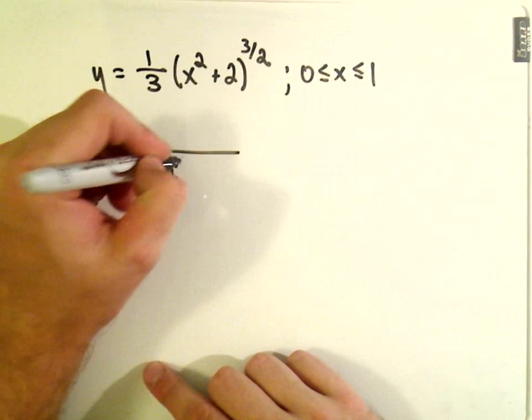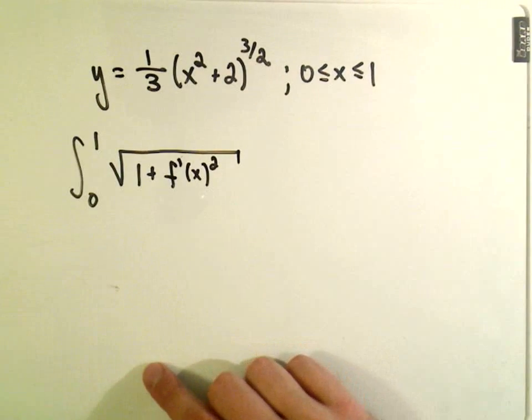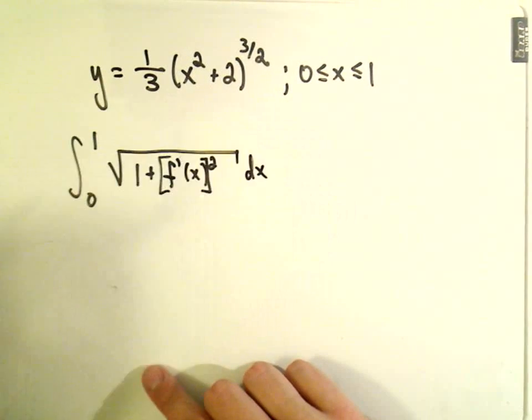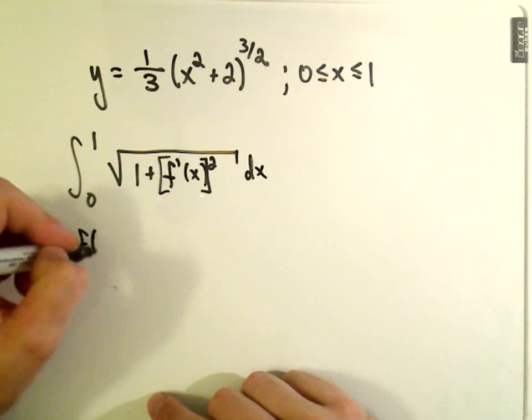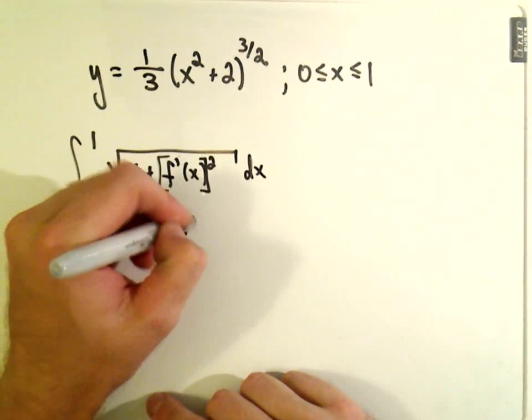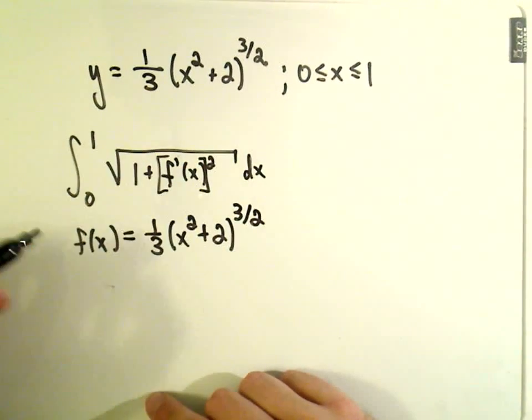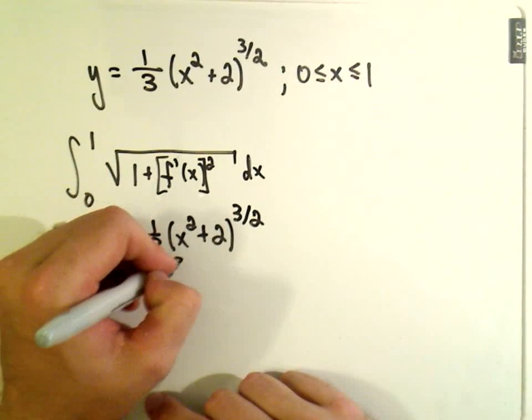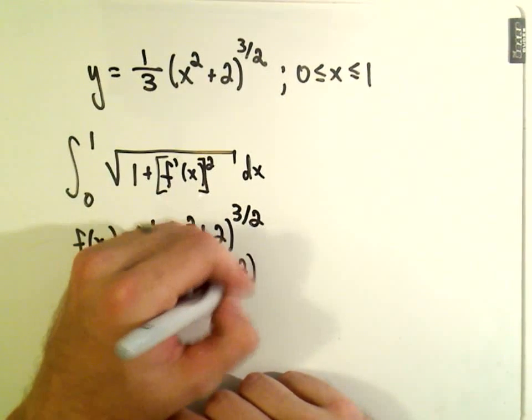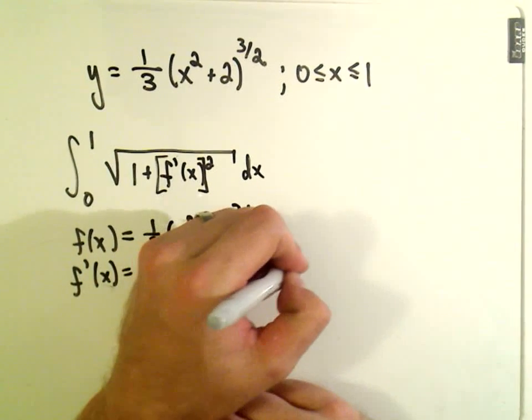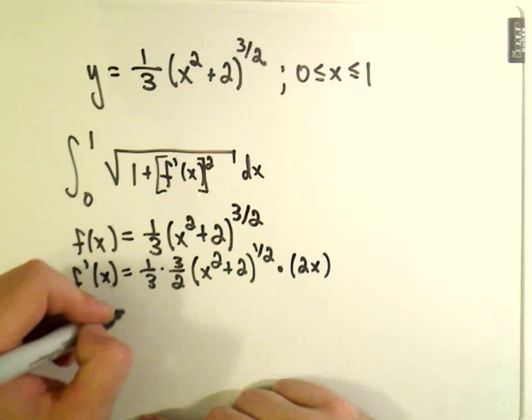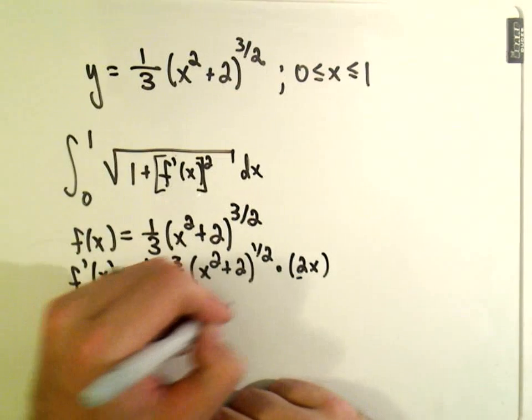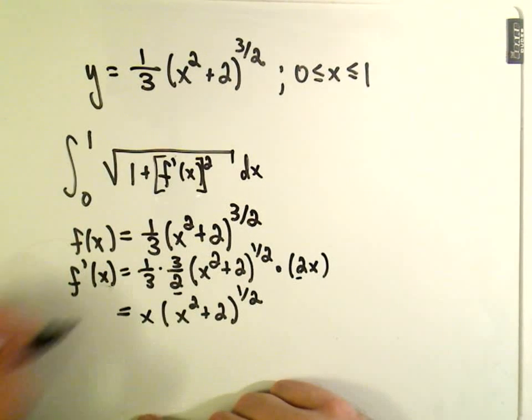The 0 and 1 are going to give us our limits of integration. We have to calculate this 1 plus f prime of x squared quantity. Y or equivalently f of x, that's our function: one-third x squared plus 2 raised to the 3 halves power. I usually start by taking the derivative. The one-third is along for the ride, the 3 halves comes out front, we get x squared plus 2 to the 1 half power, multiply by the derivative of the inside which is 2x. We can clean this up, the 3's cancel, the 2's cancel, and we're left with x times x squared plus 2 raised to the 1 half power.